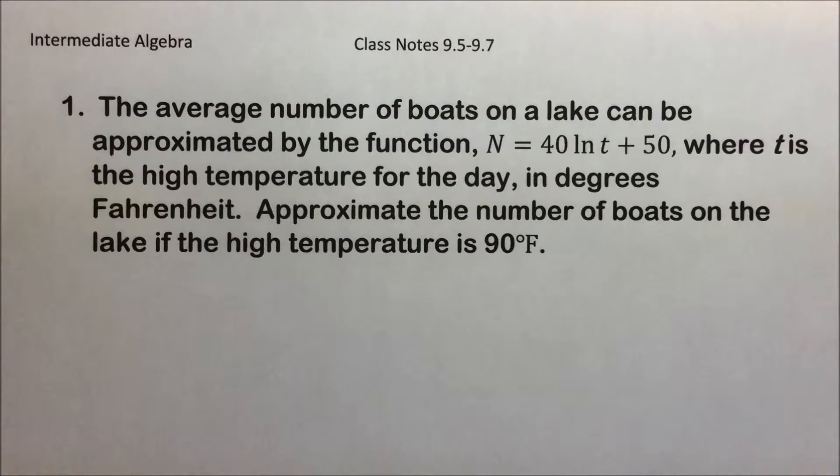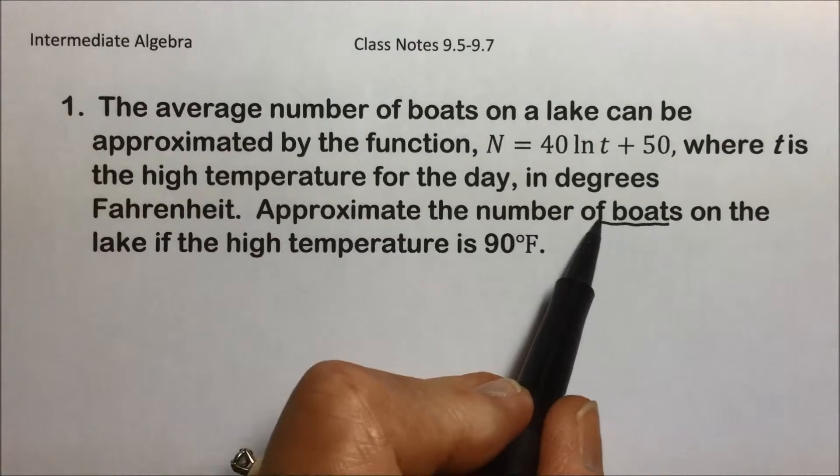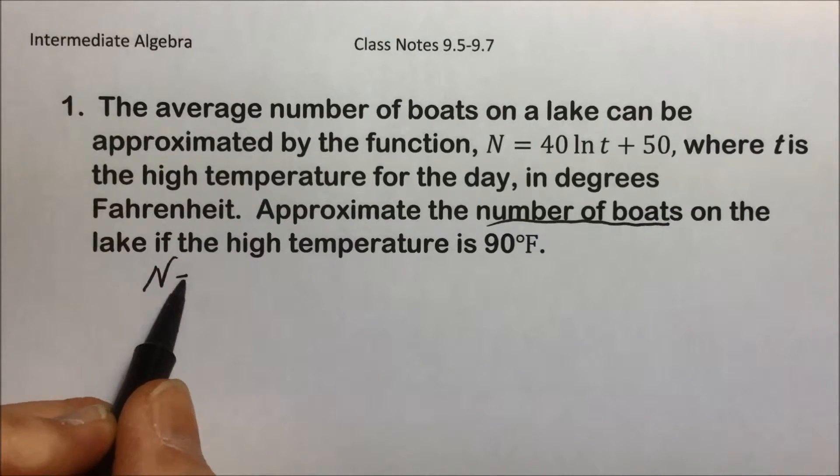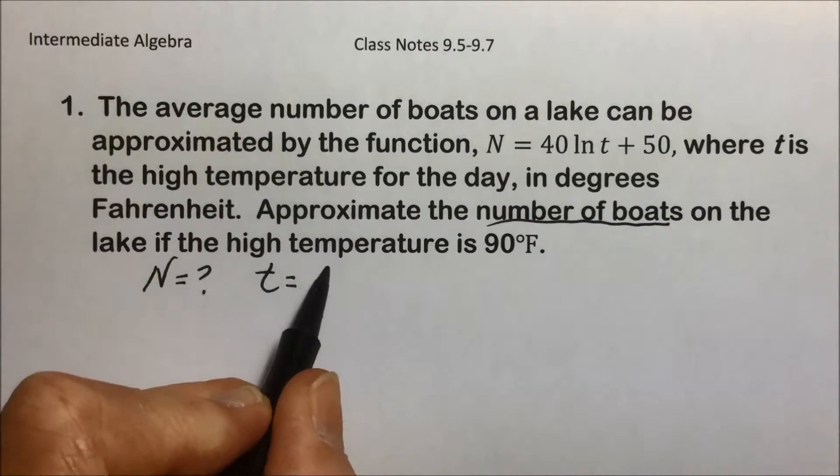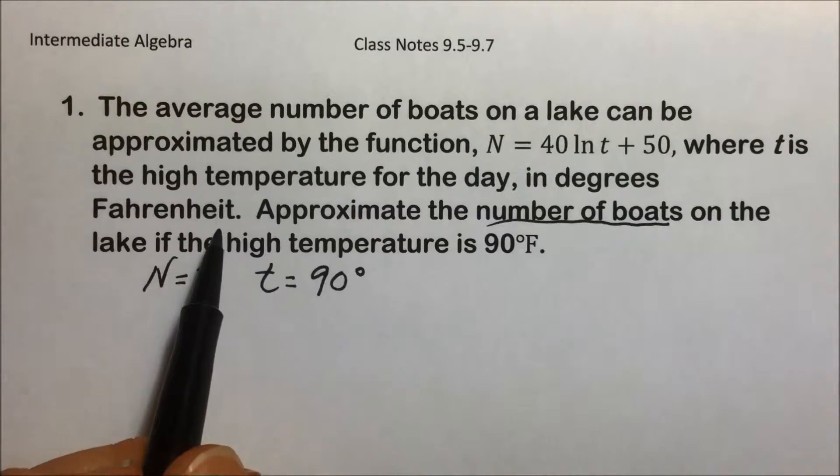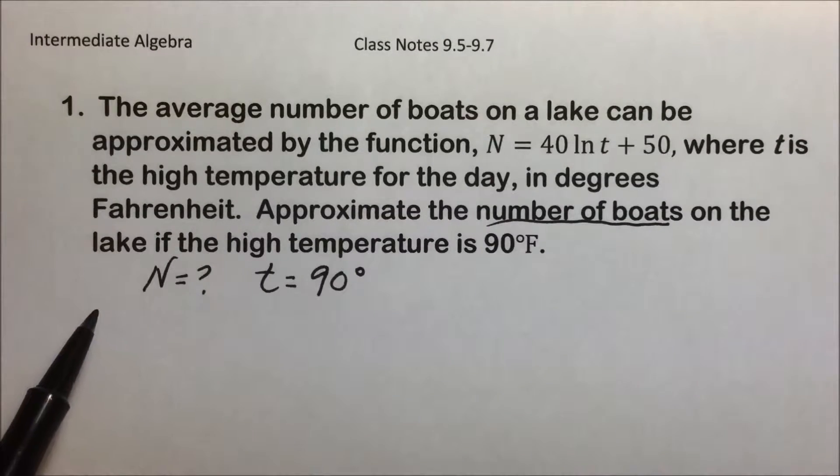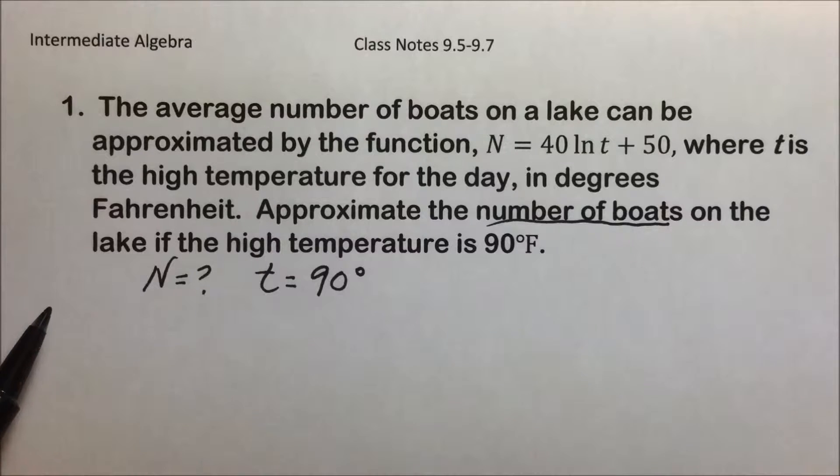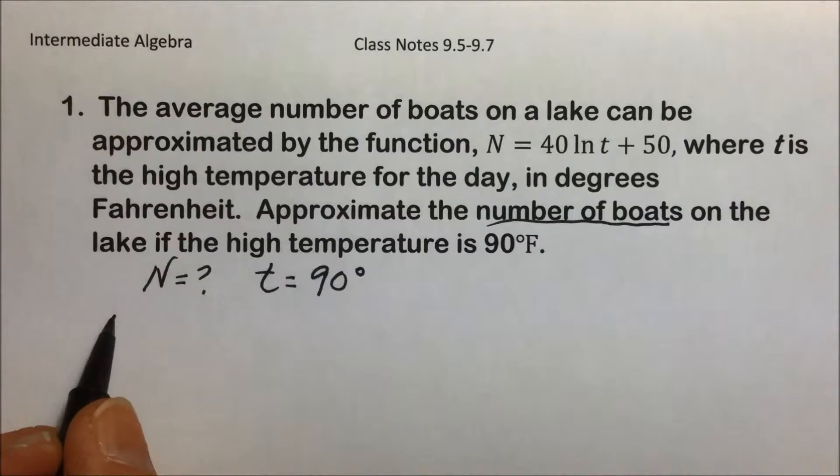So they're asking us to find the number of boats, that would be N that we're looking for, and they're telling us that the temperature is 90 degrees. It's in Fahrenheit, and the formula states that the t temperature is in degrees Fahrenheit. So we're all set to go.